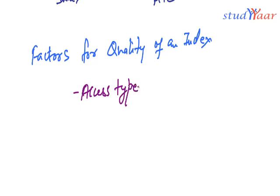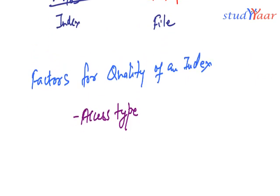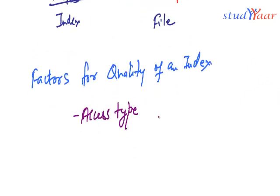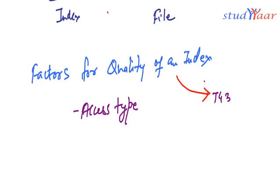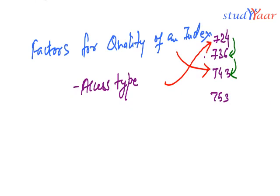Access type would indicate, does it actually give me the access to the record that I want or does it take me to a record which is nearer to the record that I want. There can be two cases where I need 743 and my index takes me to 743. In another type of index it can be possible that I need 743 but it takes me to 724 and from there I have to go to 736 and 743 finally reaching my desired record. That is about access type.